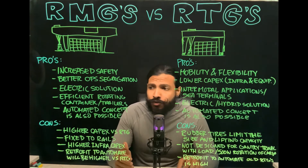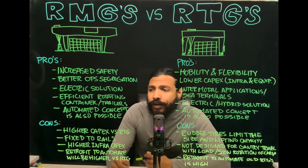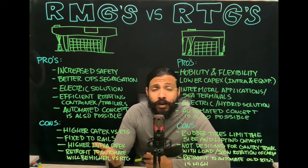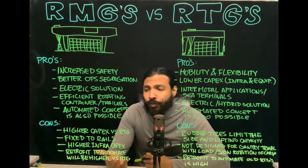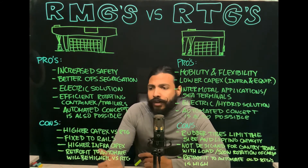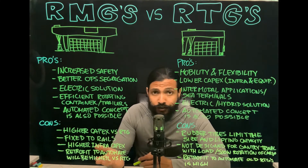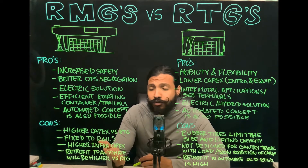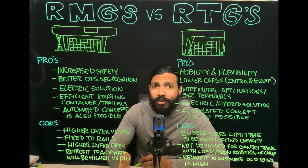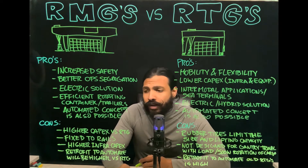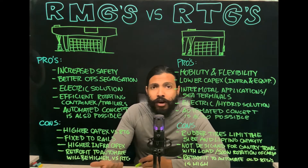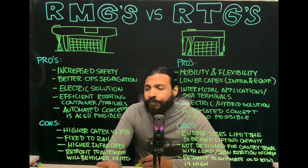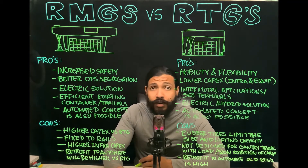Now let's go into the cons of RMGs. Yes, there is a higher capex compared to RTGs — that's well known. The RMG will be fixed to rails due to the nature of the equipment. There is also a higher infrastructure capex: depending on your terminal, you will need to evaluate piling and rail tracks. And if you are planning to automate an older RMG, the retrofit cost may be quite high.